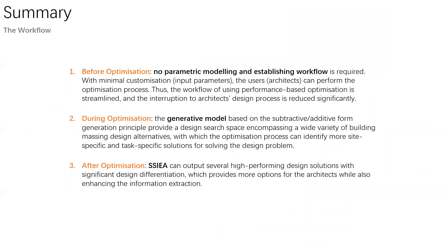Using the toolkit has three major advantages. The first advantage is that before the optimization, no parametric modeling is required. In some cases, if the architect already has an optimization workflow, they don't even need to re-establish the workflow for each project, which streamlines the design process and reduces interruption to the architect's design process. The second advantage is that during the optimization, the generative model can generate a wide variety of building massing design alternatives, which helps the optimization identify more site-specific and task-specific solutions. The third advantage is that after the optimization, the SSIEA can output several high-performing design solutions with significant differentiation, which not only provides more options for architects but also enhances information extraction.